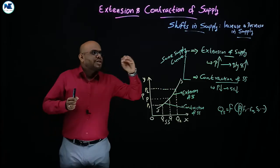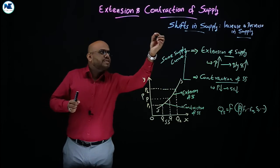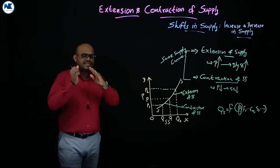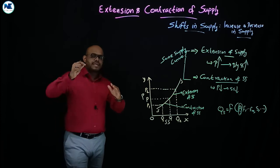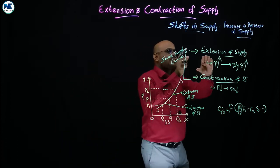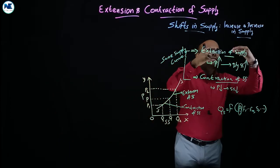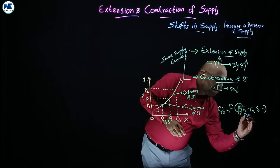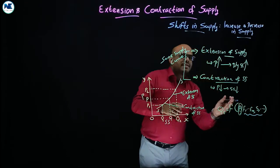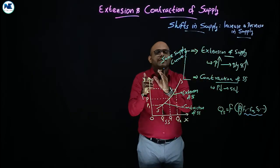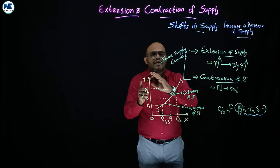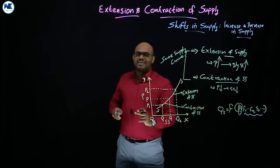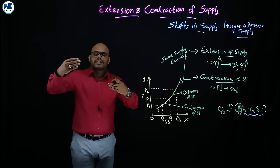Now we are going to discuss another topic: shift in supply, that is increase and decrease in supply. The changes in supply that result in a shift happen due to all the factors that determine quantity supplied other than the price of the commodity.